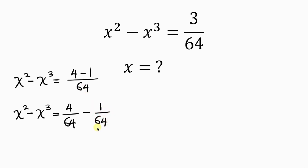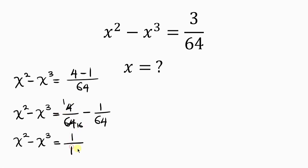So we have x squared minus x cubed equal to — now 4 divided by 4 is 1, and 64 divided by 4 is 16, so that means we have 1 all over 16 minus 1 all over 64.